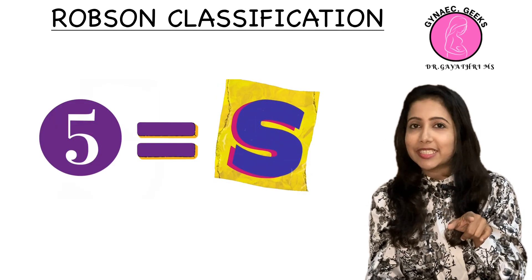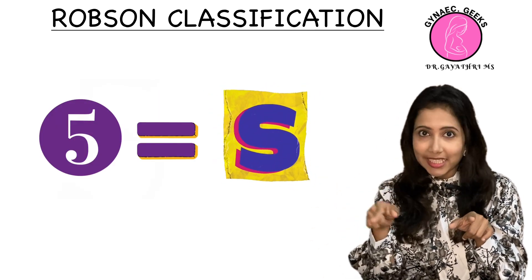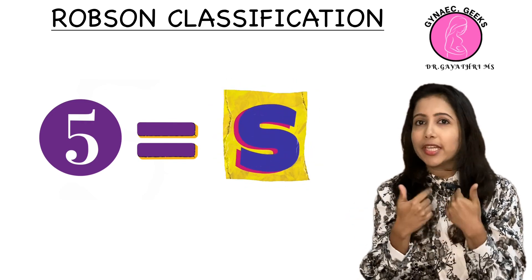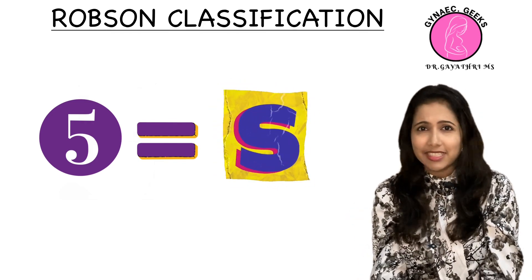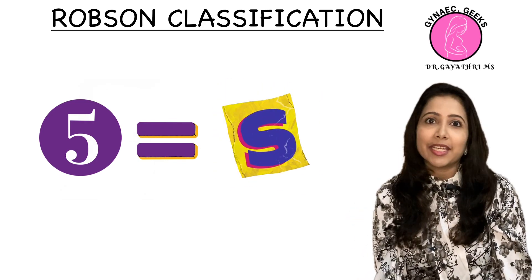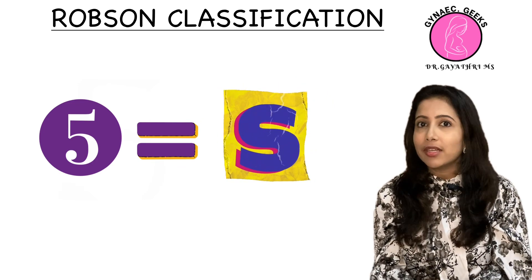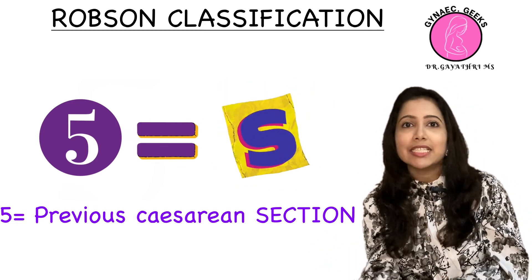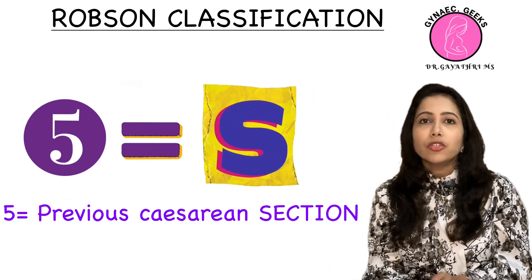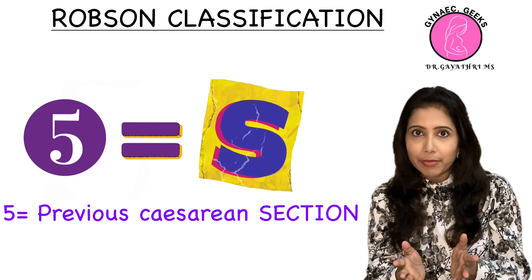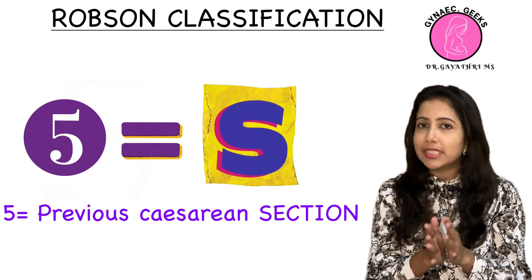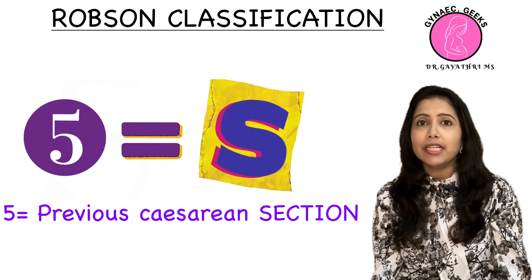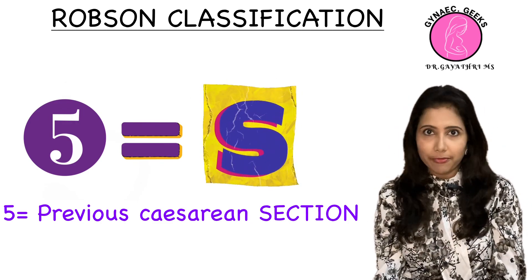Coming to Group 5: the numeral 5 is visually similar to the letter S — S for section. So Group 5 covers all women with a previous cesarean section, again singleton and cephalic presentation.